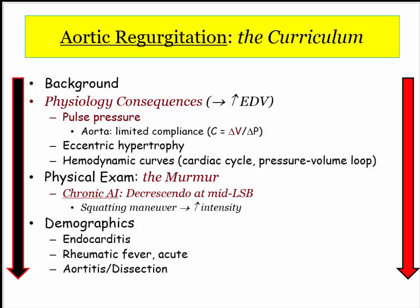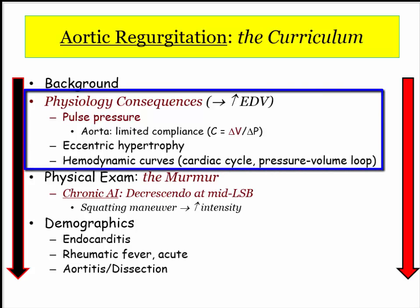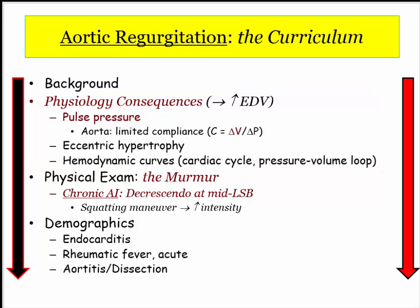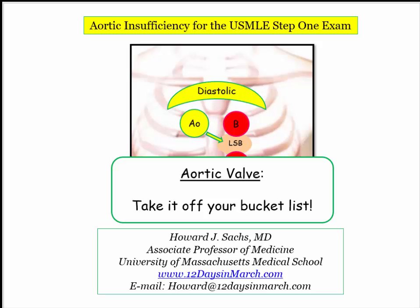And that is it. Here we are back at the roadmap. The physiologic consequences are the most likely to be tested. As with other valvular heart disease, they assume you will be able to identify the murmur when presented. The demographics are included just for fun. That'll do it for the aortic valve — you can take aortic valves off your bucket list. If you have any questions or concerns about any of the material presented, please contact us at 12 Days. Thank you.